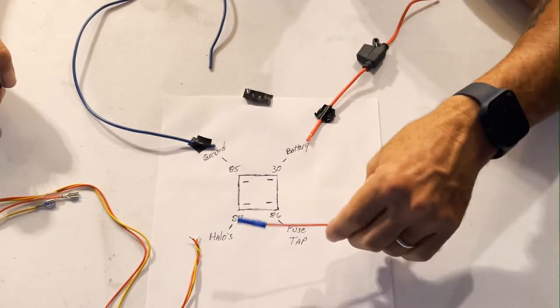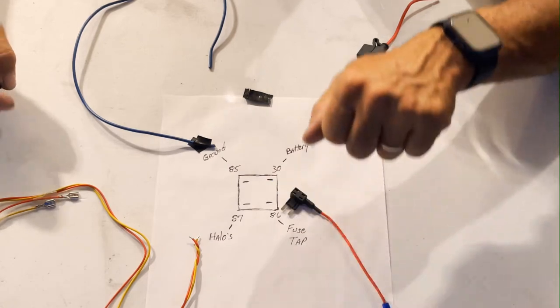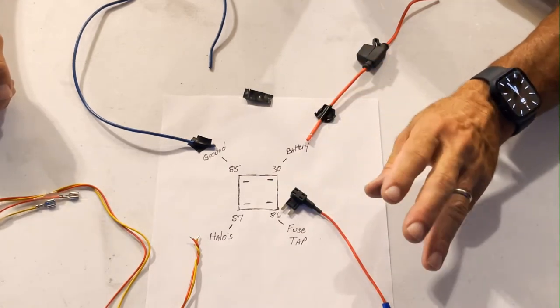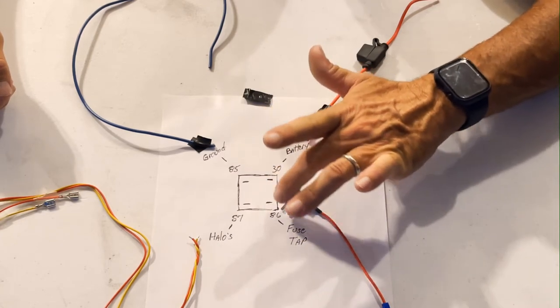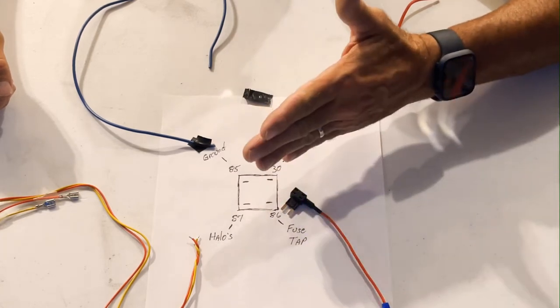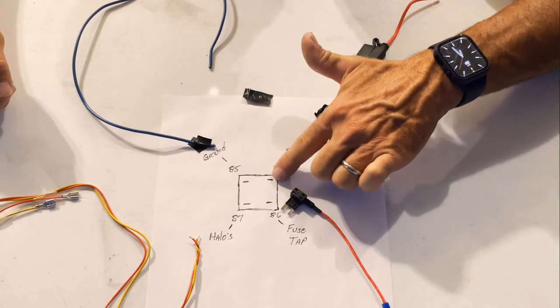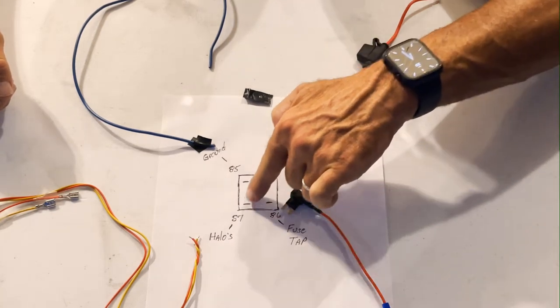So what'll happen is when you turn your key and energize that fuse, it's going to allow a magnetic connection that's going to switch and allow 30 to now send that 12 volts to 87.